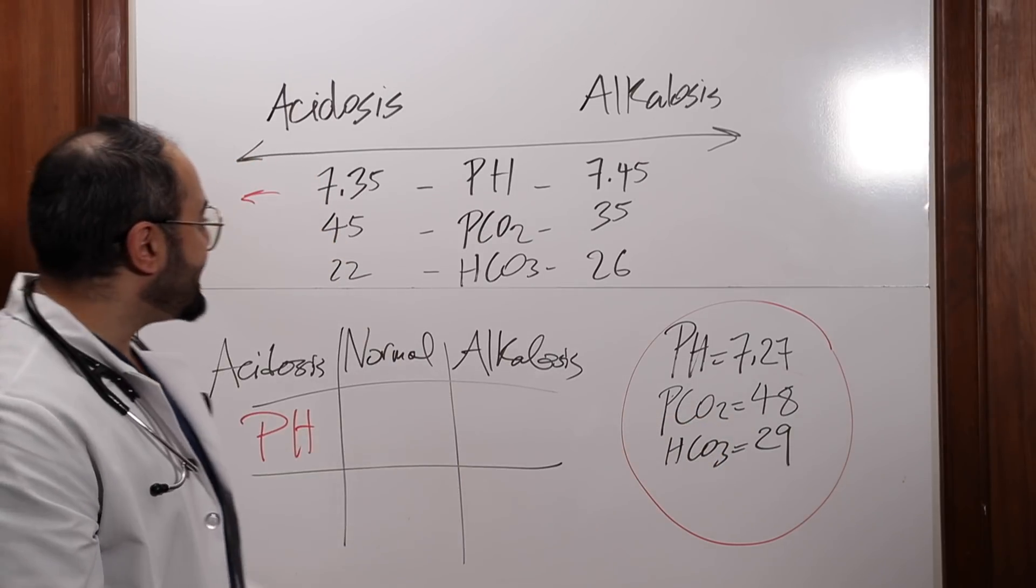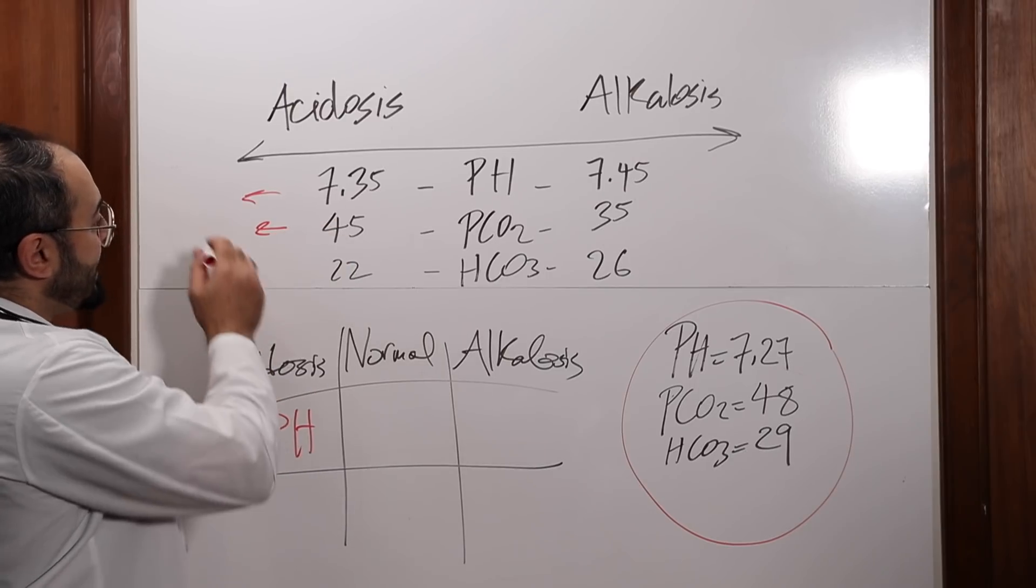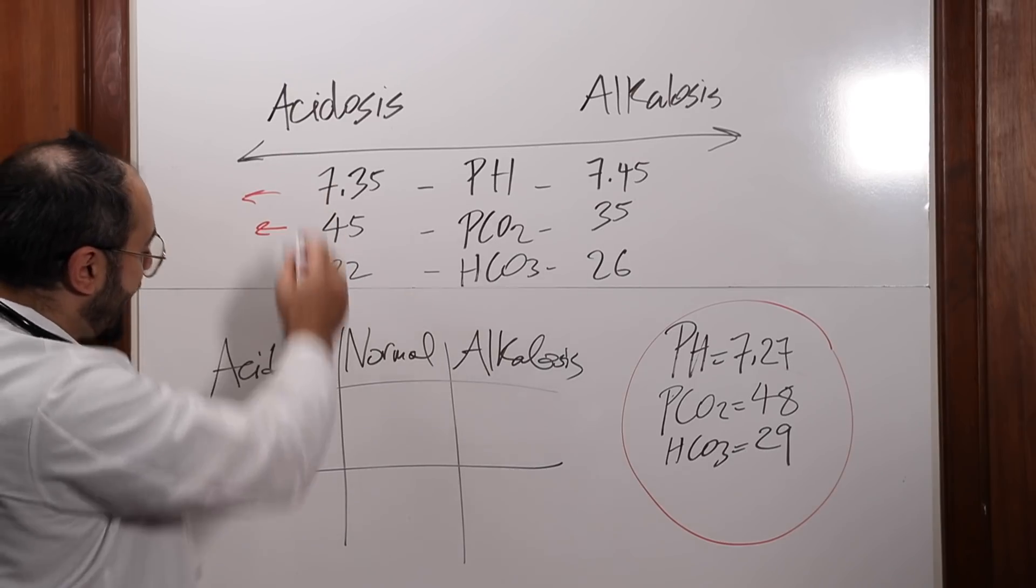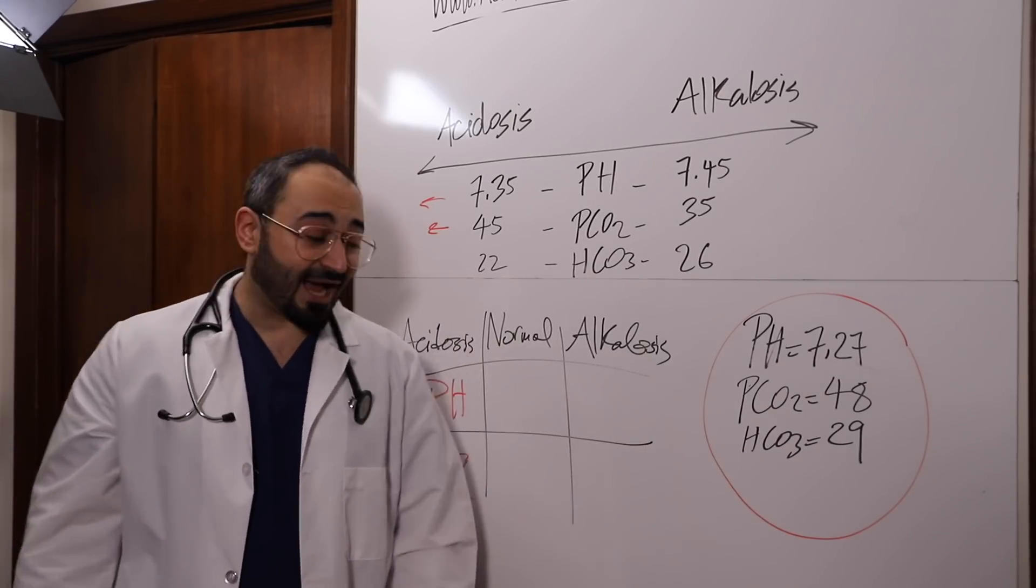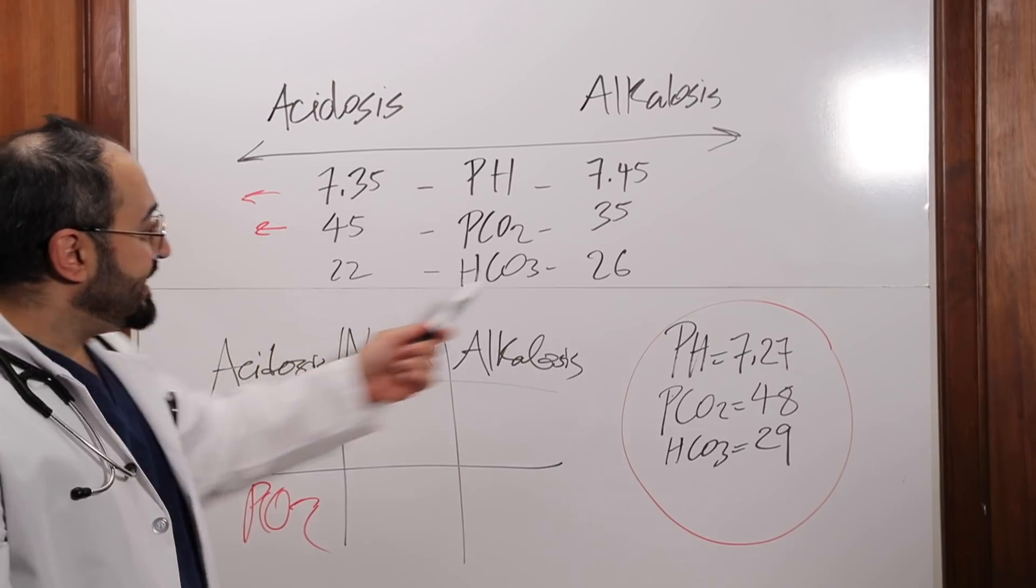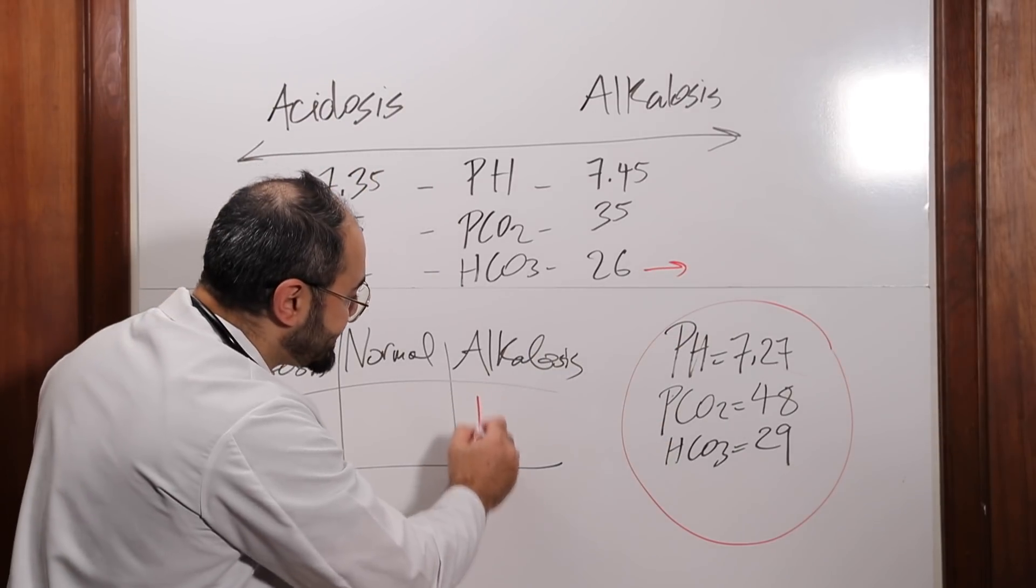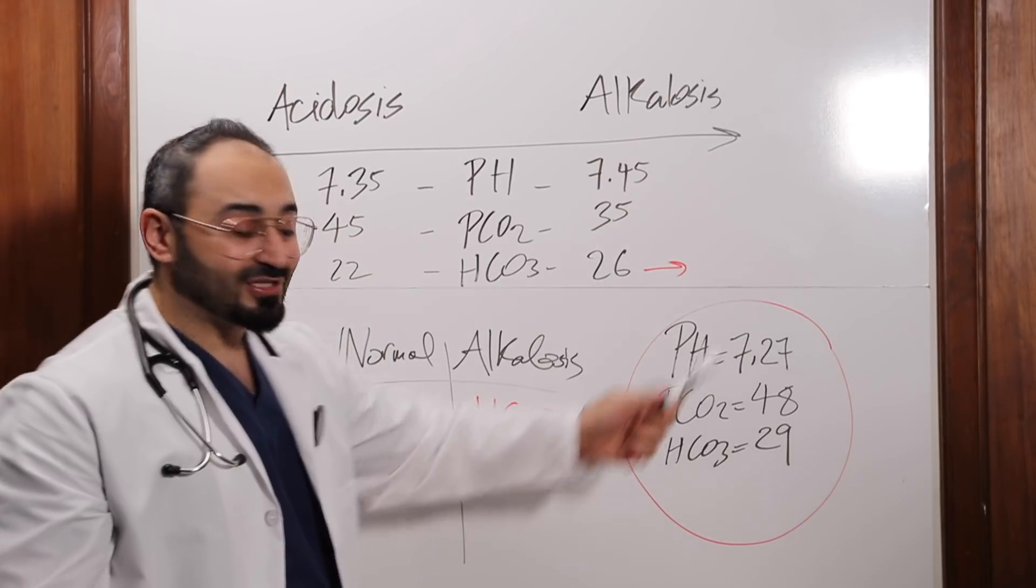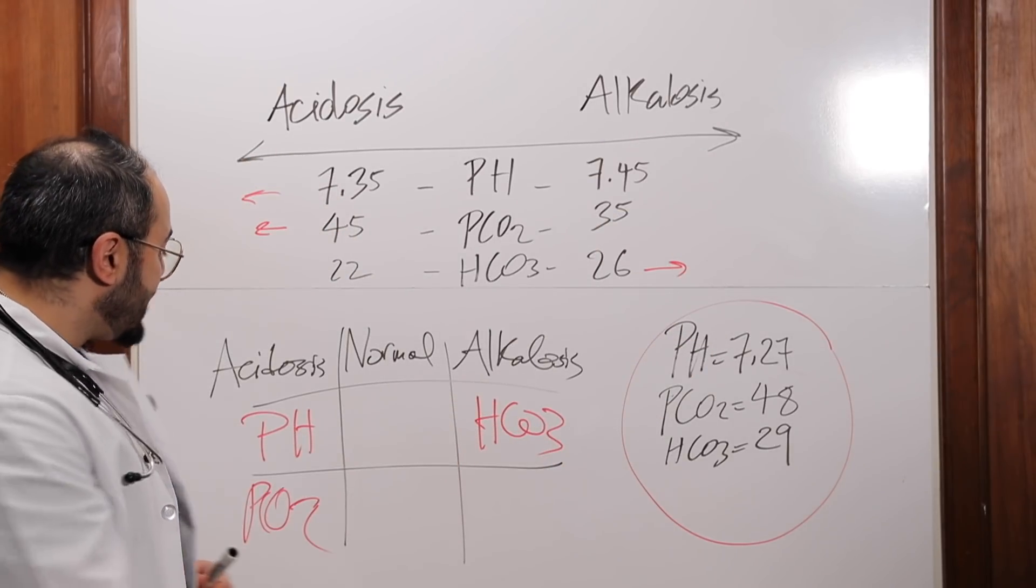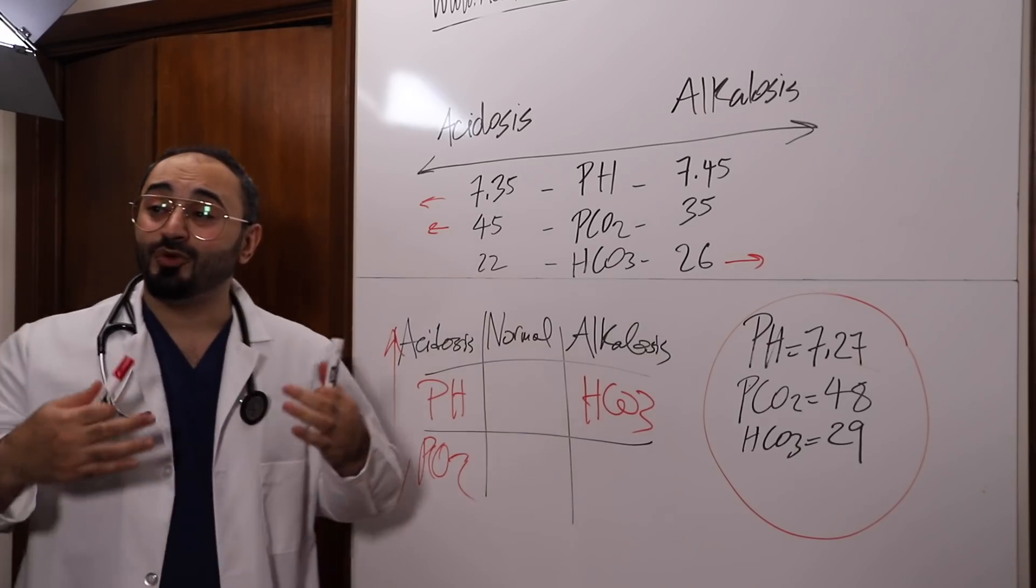PCO2 is 48, so 48 is right here. It's higher than 45, so 48 is right here. So I'm gonna put it under acidosis, so PCO2. And then you've got your bicarb is 29. So where does that fit? It fits right there, because it's more than 26. So I'm gonna put HCO3 and alkalosis. It's right here under alkalosis, so I'm gonna put it right there. So now, I've got the tic-tac-toe. It's right here. So what do I call it?